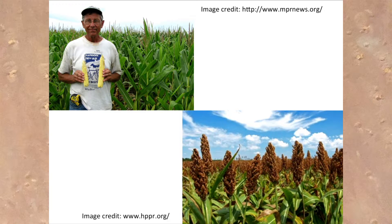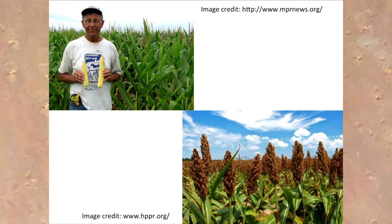C4 grasses are also hugely important as a food source for humanity. Prominent C4 crops that humans eat include corn, sugarcane, sorghum, millet, and teff, as shown here. In the upper left panel there's a farmer in a cornfield, and in the lower right we see a picture of sorghum crops.